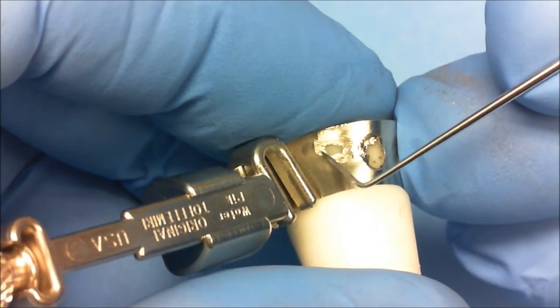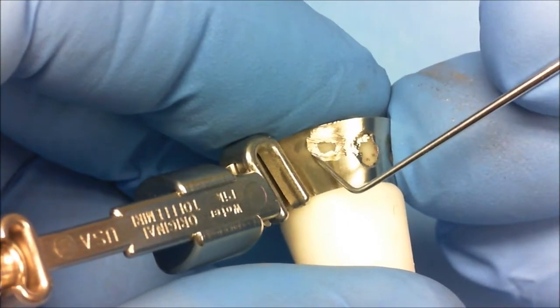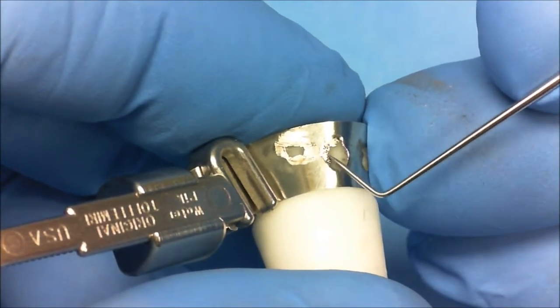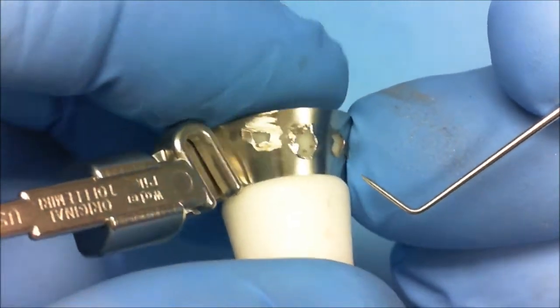On close examination, you will notice that the transition from the periphery of the opening onto the tooth is imperceptible to the explorer tip.